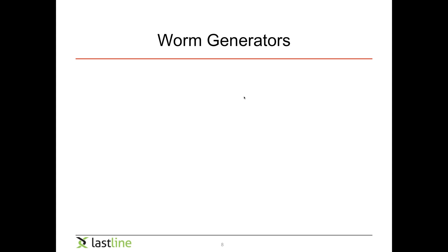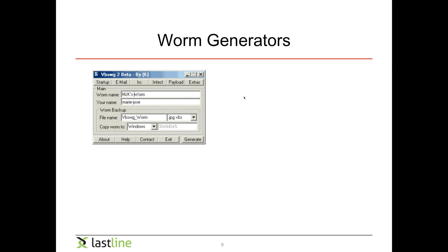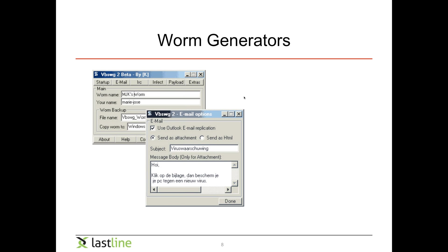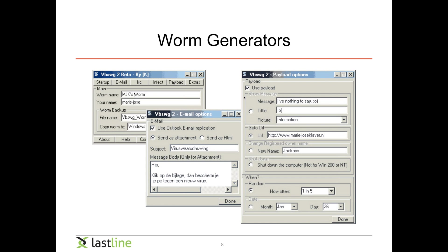Just like virus generators, you also have worm generators. You can give a name to your worm, specify how it's supposed to spread, create an email template to trick people into clicking on attachments, and specify what kind of payload you'd like to execute — and the worm is generated automatically. As with viruses, it's not a good thing that these worm generators exist, but when they generate worms they have similarities that can be used for defense. They tend to look more or less the same. However, it makes the malware problem worse because people who are not technically sophisticated are allowed to create worms.